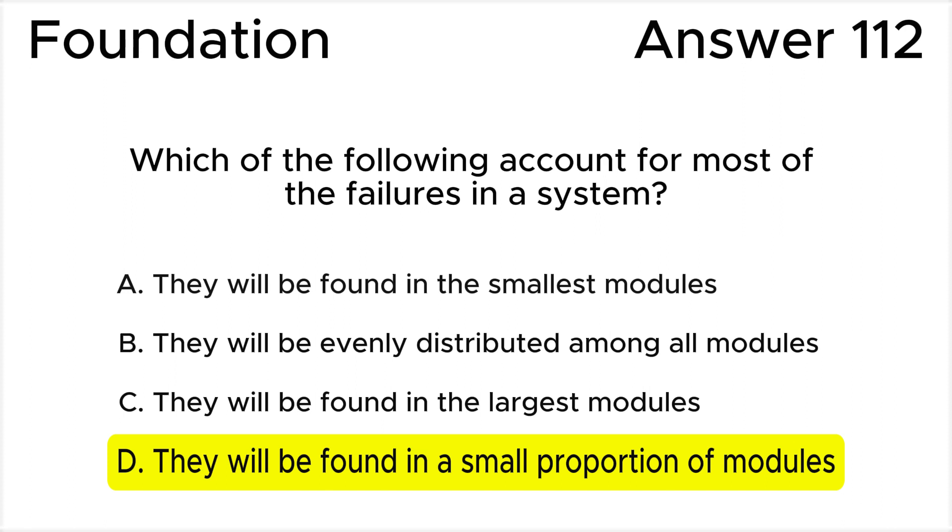All the rest of the answers are wrong. Answer A is wrong because the size of a module does not determine the presence or absence of defects. Answer B is wrong because the size of a module is not a reliable indicator of the presence of defects. Large modules may or may not have more defects. My recommendation: please figure out all testing principles with examples to understand the meaning of each of the principles.